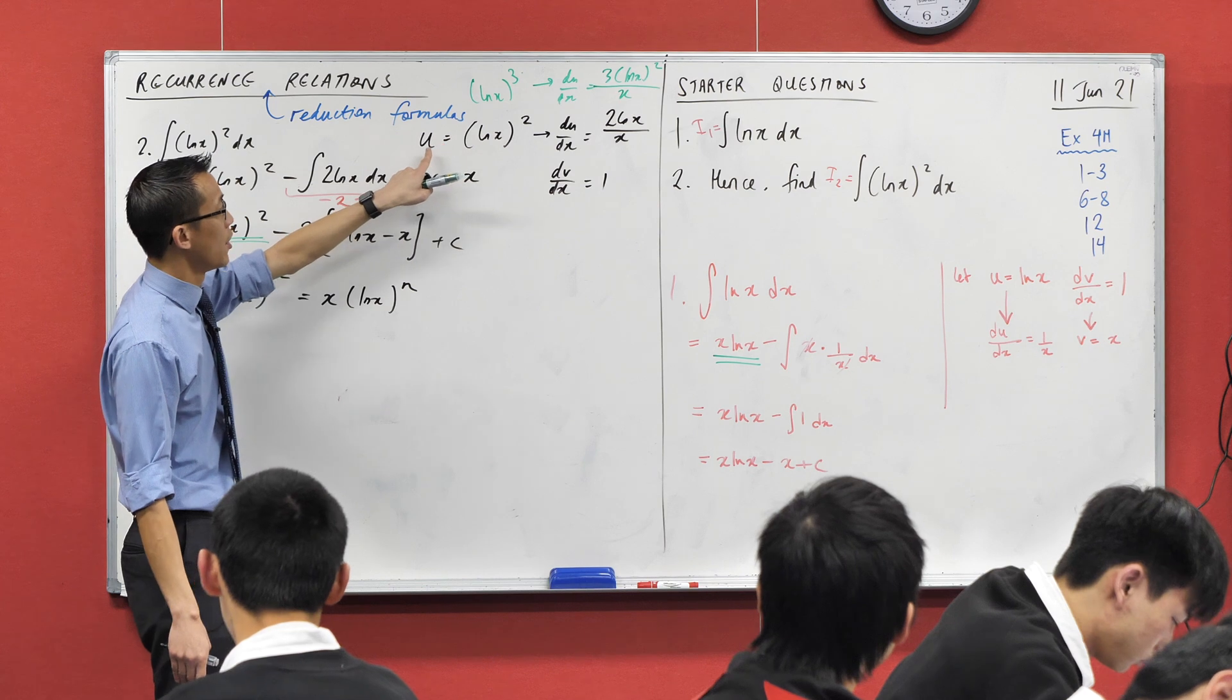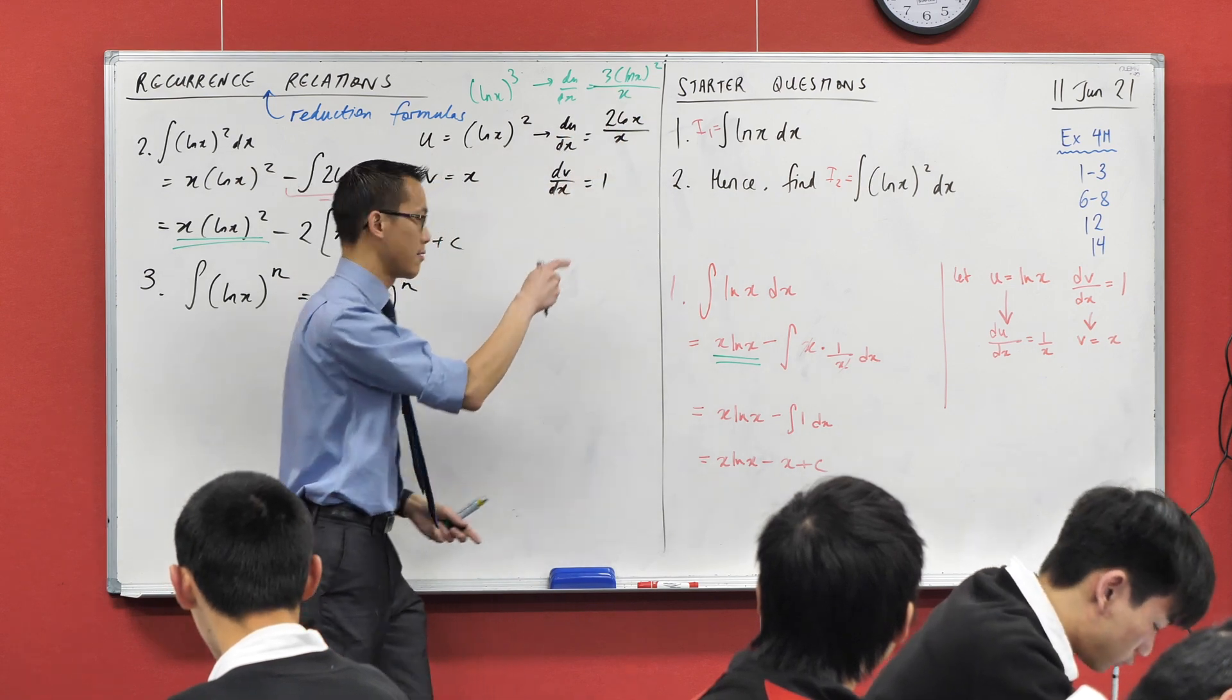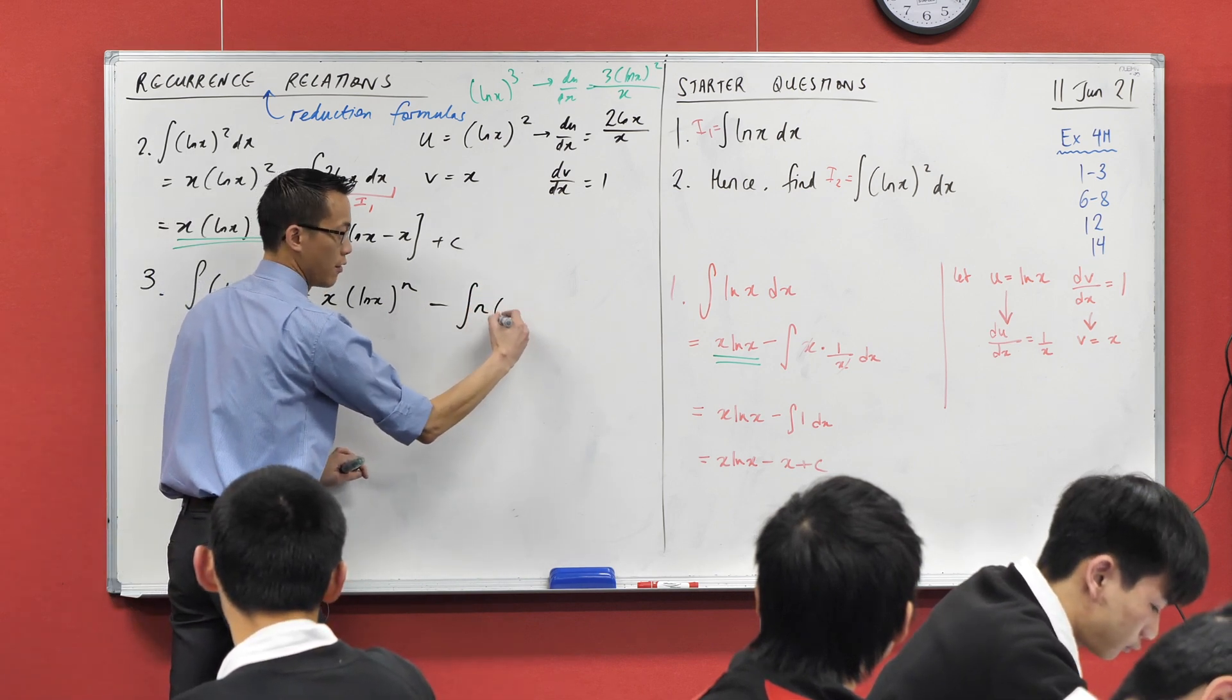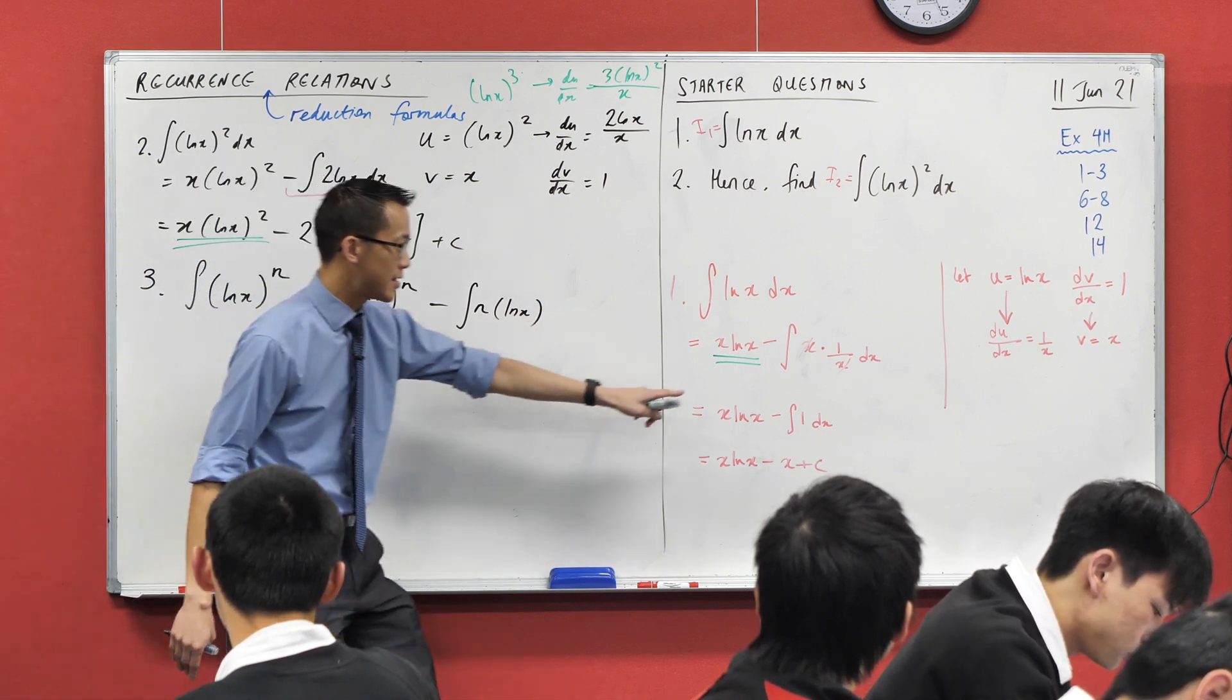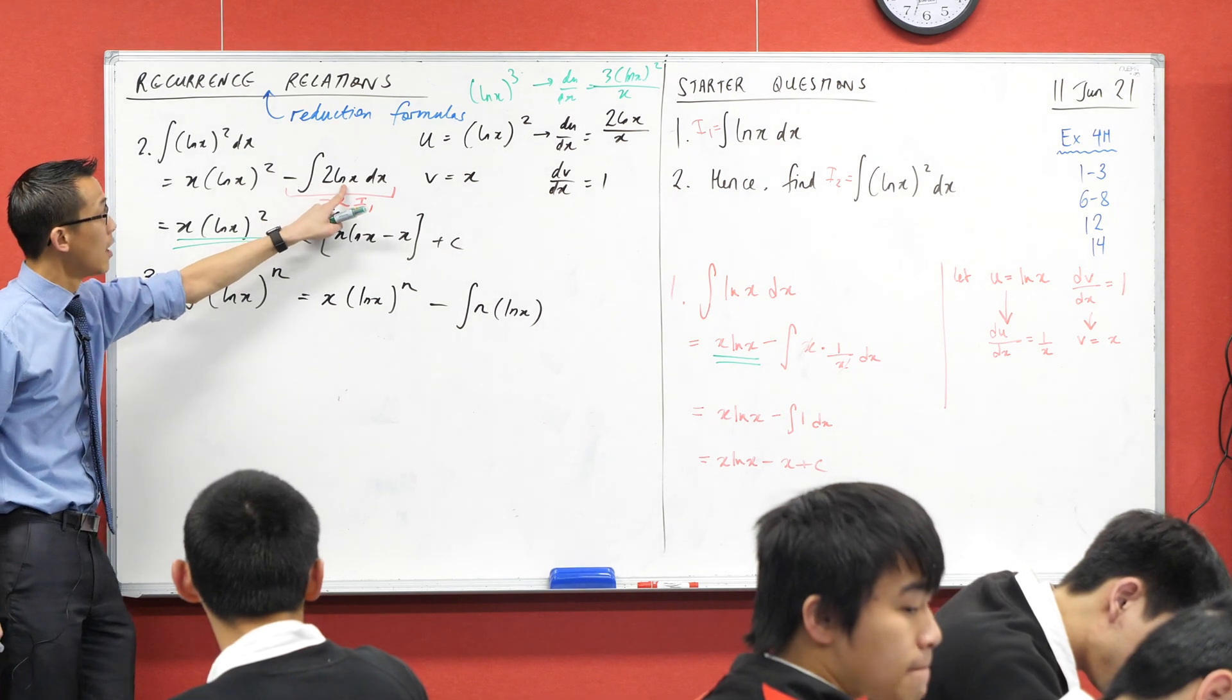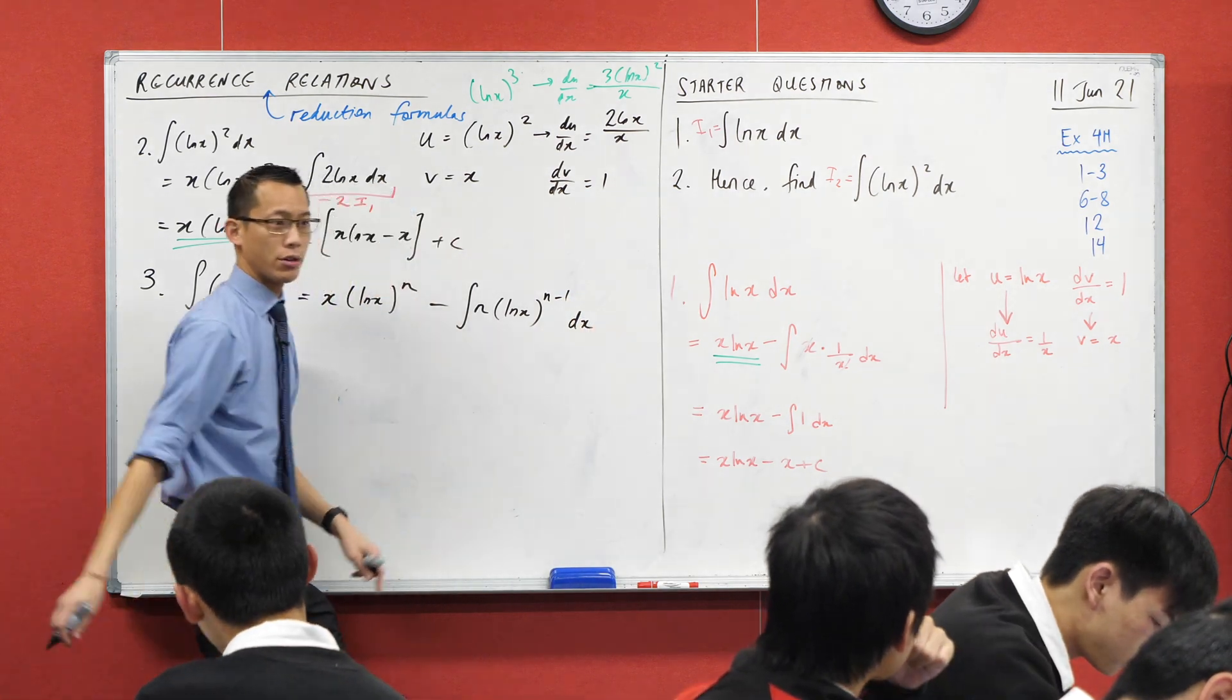If I went all the way to the nth one, how many am I likely to have? n of them, because you're going to have u being equal to (log x)ⁿ, you differentiate and you get n (log x)^(n-1) - minus integral of n outside (log x)^(n-1). Here's the n-1, here it's 1-1 which is 0, that's why there are no log x terms there. Here's the 1 log x term, here I got 2 right there. There's the n-1, so here's n-1. Is that alright?